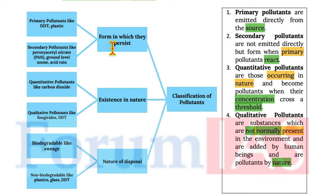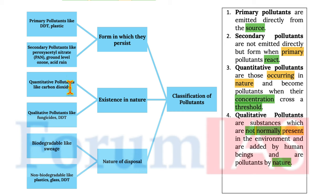On the basis of form in which they persist, we have primary pollutants like DDT and plastic, and secondary pollutants like peroxyacetyl nitrate, ground level ozone, acrolein, etc. On the basis of existence in nature, we have quantitative pollutants like carbon dioxide and qualitative pollutants like fungicides and DDT.